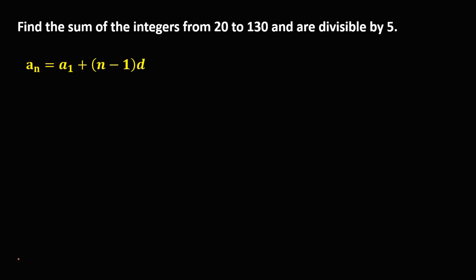Using this formula, with n given: since 20 is the first term, that's a sub 1, and 130 is the last term, that's a sub n. Then substitute into this formula to solve for n. So a sub n, that's 130, equals a sub 1, that's 20, plus n minus 1 times d, the common difference. Since divisible by 5, the common difference is 5.